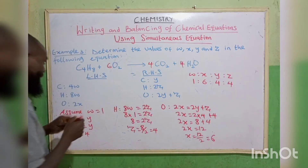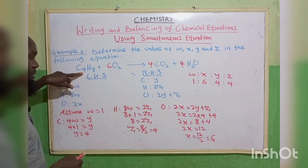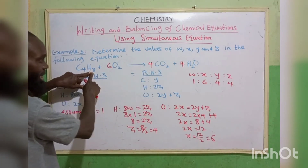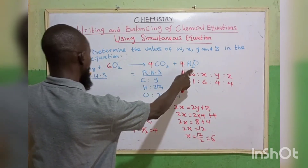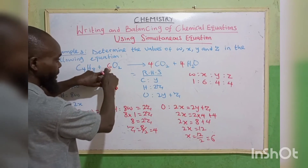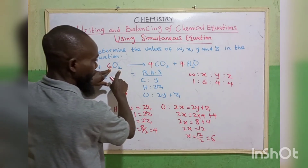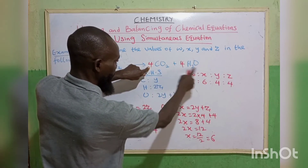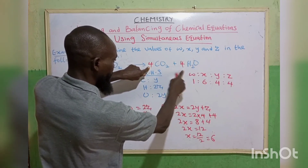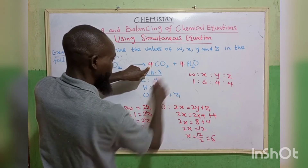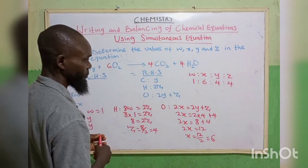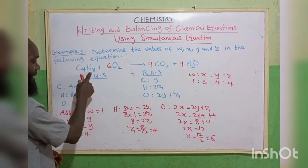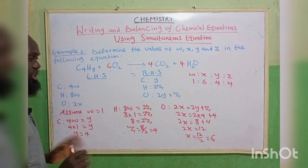Let's verify. How many carbon on the left? 4. How many carbon on the right? 4. How many hydrogen on the left? 8. On the right? 4 times 2 gives 8. How many oxygen on the left? 6 times 2 gives 12. On the right? 4 times 2 gives 8, plus 4 gives 12. The equation is balanced.